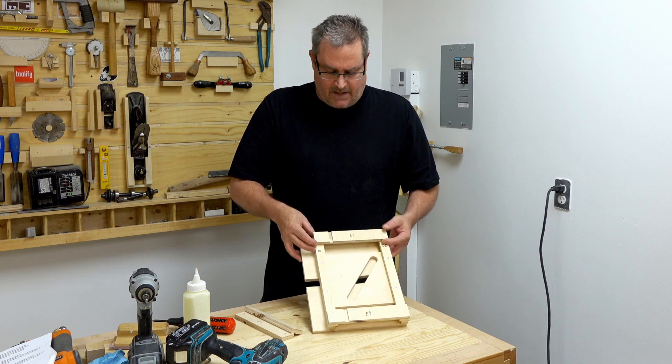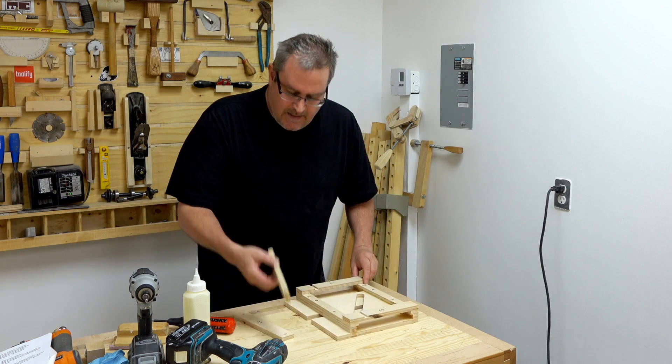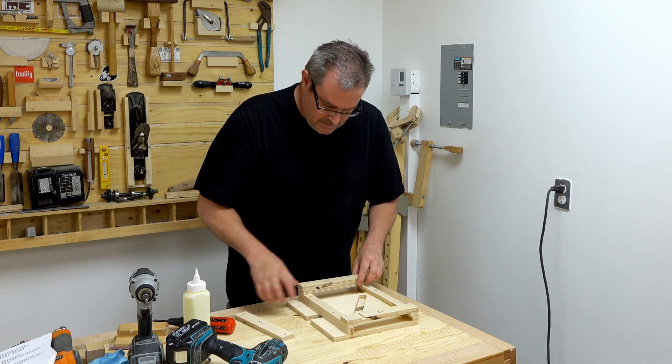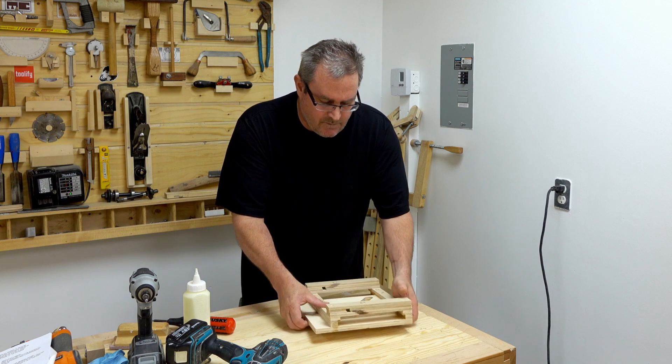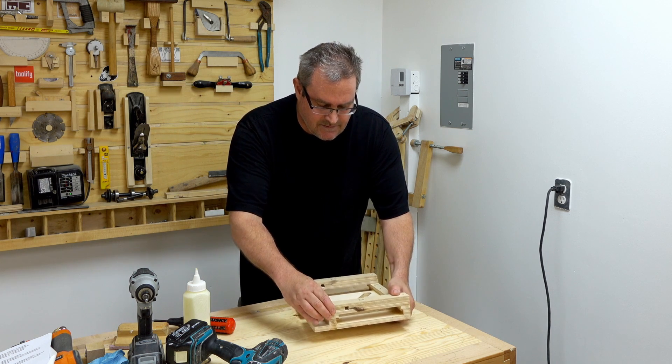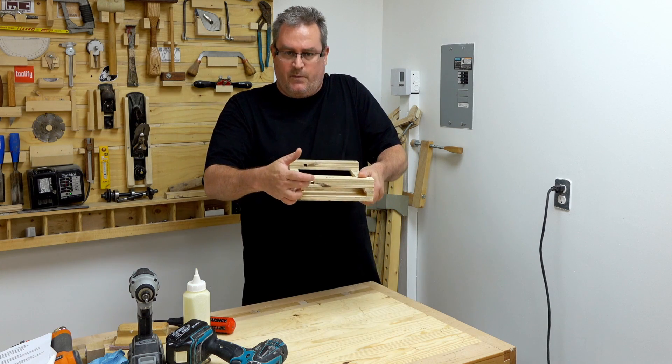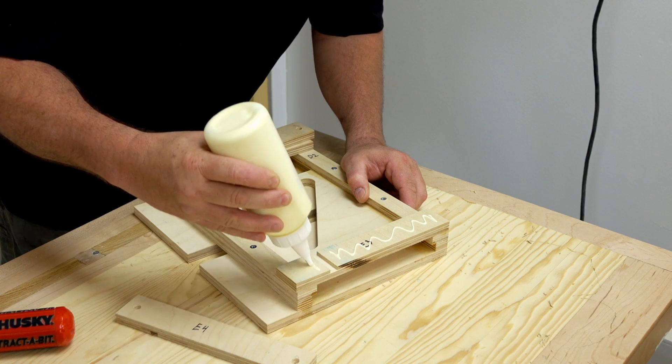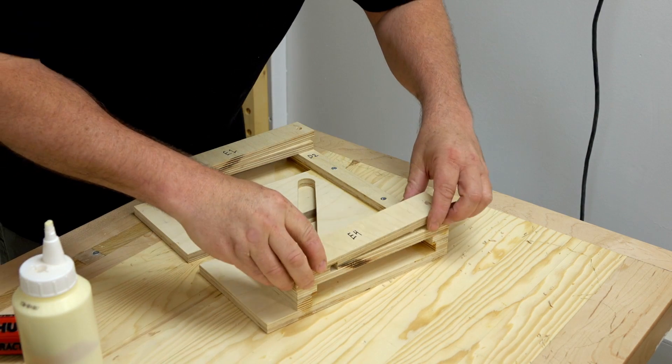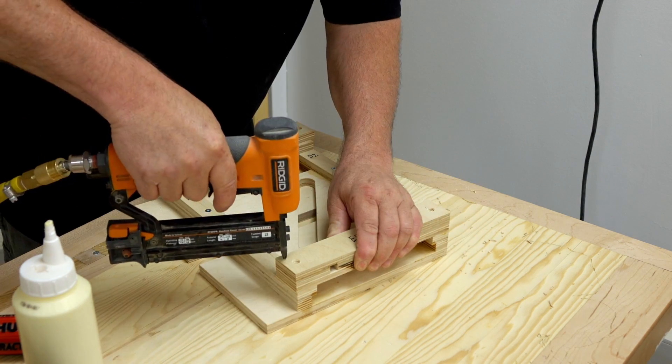The glue has had time to dry on parts E1 and E3, and now I'm going to add E2 and E4 on the outside. Important to note that when these two go together, there's a slot or an opening that the threaded rod will fit through. Once again I'm going to use glue and fire a couple of pins in just to hold it until I can drive the screws in as well.